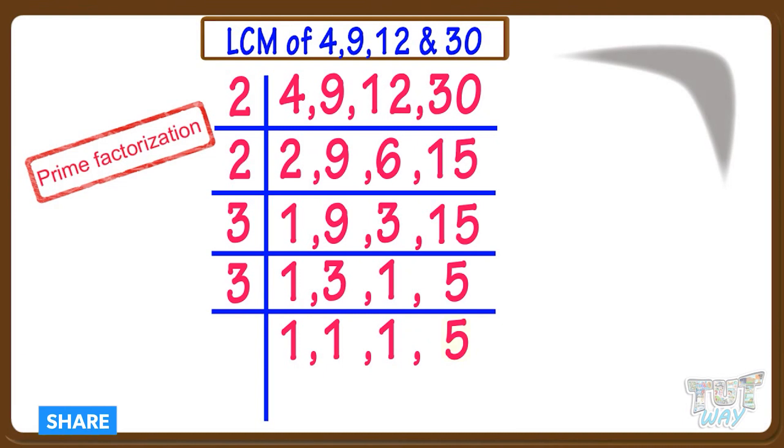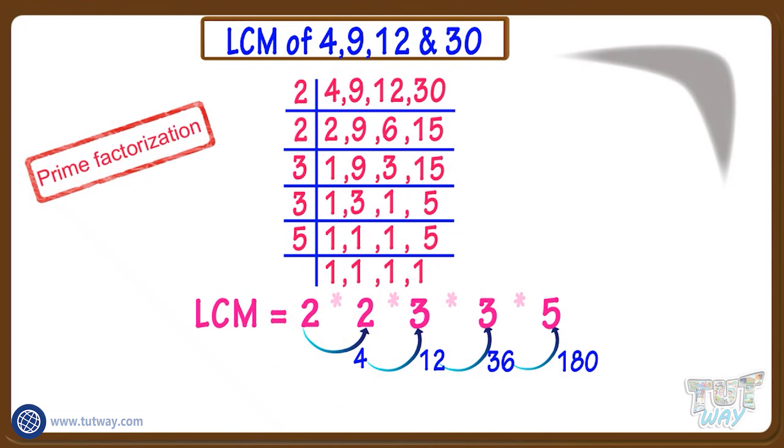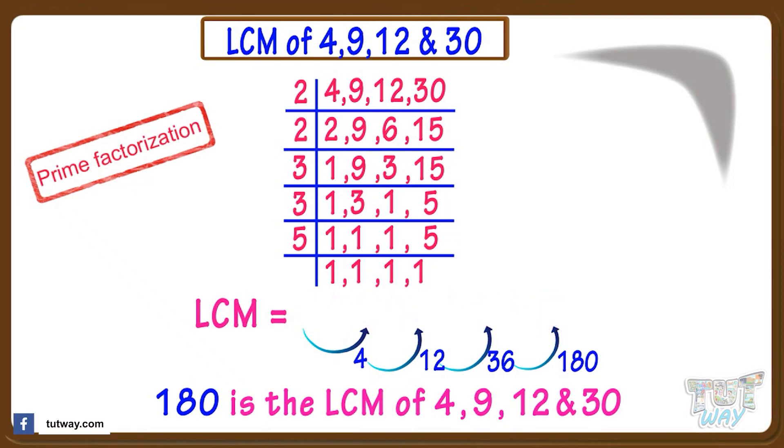Yes, 5 will divide the number left. All numbers reduce to 1 now. Now next step is take all these numbers and multiply. 180 is the least common multiple, LCM of 4, 9, 12, and 30.